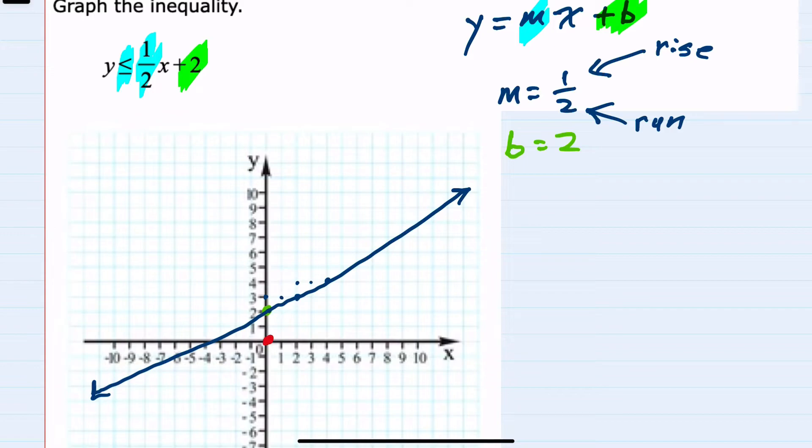Here, when I plug in the point 0, 0, I would be replacing y with 0 less than or equal to one-half, I would replace x with 0, plus 2. And the question for this test point is, is this a true statement? Is it true that 0 is less than or equal to one-half times 0 plus 2? To make that determination, I can simplify. The left-hand side is just 0. On the right-hand side, one-half times 0 is 0, plus 2. Now that we've simplified, is 0 less than or equal to 2? Yes, our test point worked.